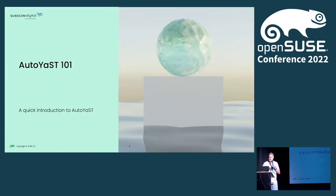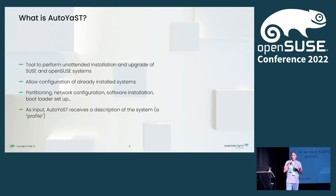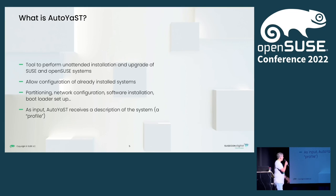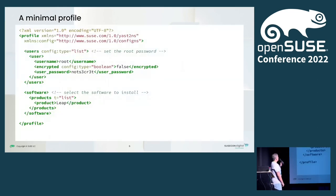So let's start talking about what AutoJazz is. Basically, AutoJazz is a tool that allows you to perform an unattended installation or upgrade of SUSE and openSUSE systems. It's also able to configure a system that is already installed, but just a limited set of aspects — those aspects that Jazz knows about. It takes care of partitioning, configuring the network, installing the bootloader, and all that stuff. As an input, AutoJazz receives what we call a profile, which is basically an XML-based description of how the system should look like at the end. This is a typical minimal profile.